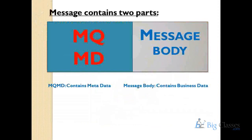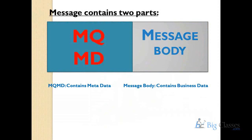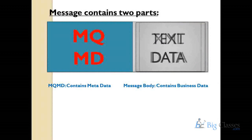Applications exchange data as messages. The message contains two parts: the MQMD header and the message body. MQMD stands for MQ Message Descriptor. The message descriptor describes the message body — defining message priority, message persistence, message expiry, message type, group ID, message ID, correlation ID, and message sequence number. That kind of metadata is contained in the MQMD header. The message body can have XML data, text data, binary data — anything.